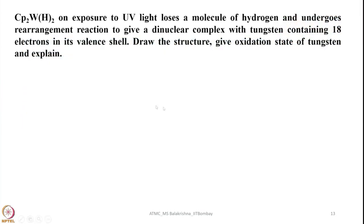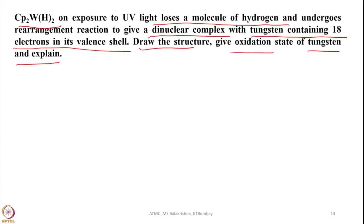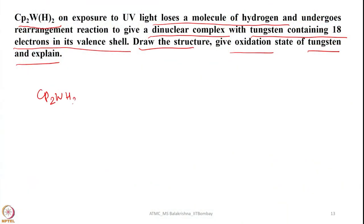An interesting problem: Cp2WH2 on exposure to UV light loses a molecule of H2 and undergoes rearrangement to give a dinuclear complex in which each tungsten satisfies the 18-electron rule. Draw the structure, give the oxidation state of tungsten, and explain. Upon UV irradiation, Cp2WH2 loses H2, leaving a Cp2W fragment. This fragment undergoes dimerization — let us determine how many electrons it has first.